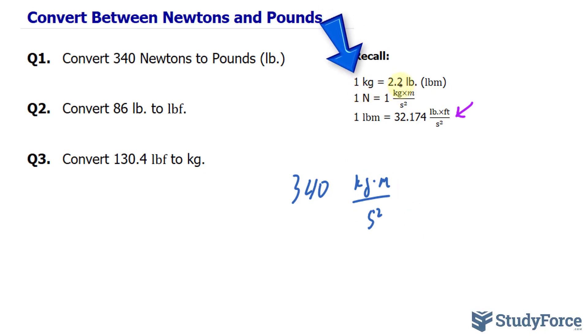There is one kilogram for every 2.2 pounds. This conversion ratio can be written in two ways. We can write it down as 1 kilogram per 2.2 pounds, or we can write it down as 2.2 pounds per 1 kilogram. The reason why I'm telling you this is because we need to multiply one of these to this number, so that we get rid of the kilograms and replace it with pounds.